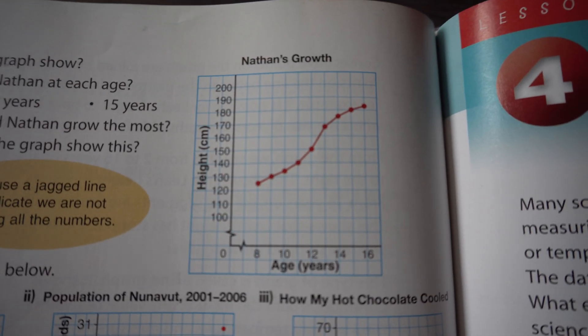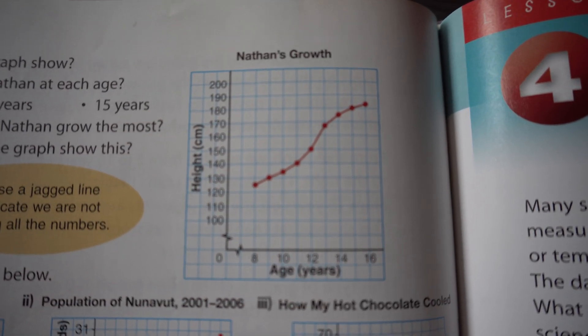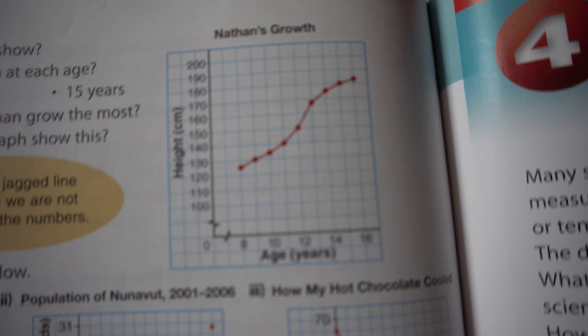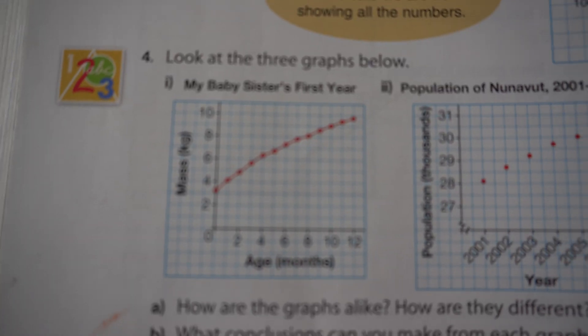So Nathan's height, you see, is joined with a line because his growth is continuous. Same thing with my baby sister's mass, because weight is continuous as well.